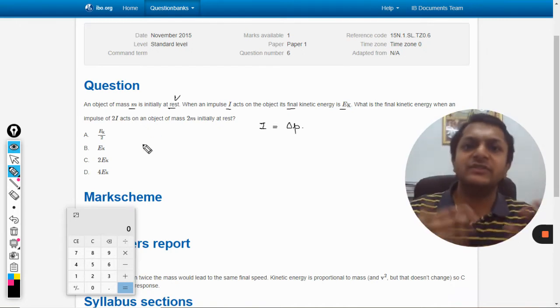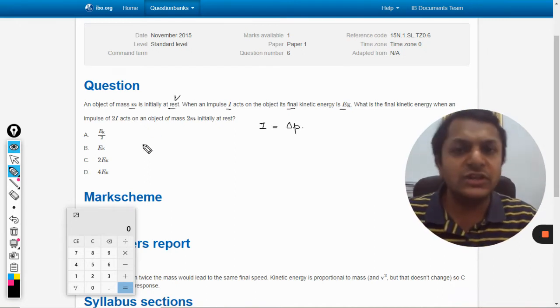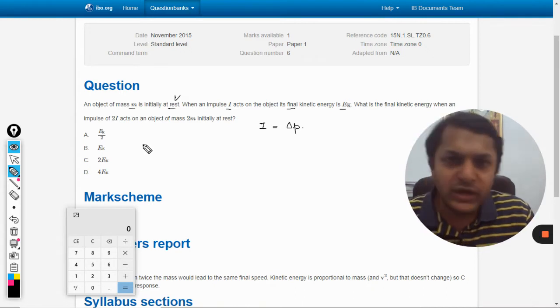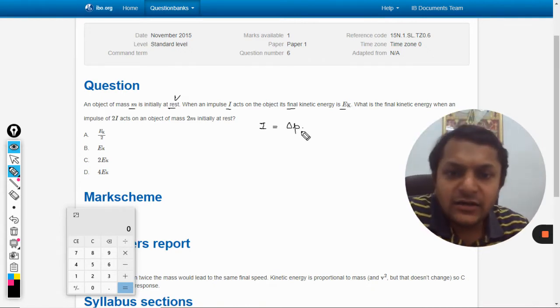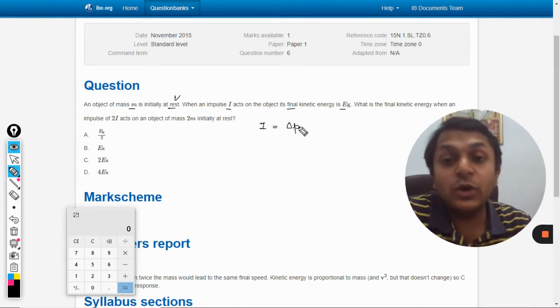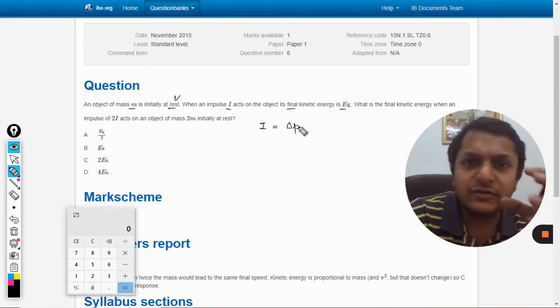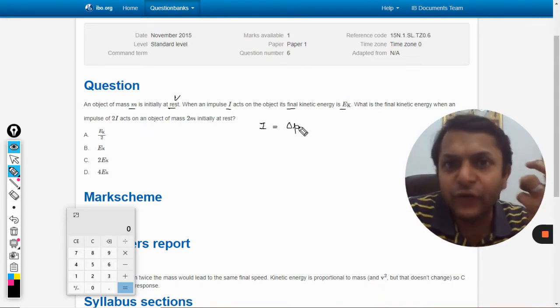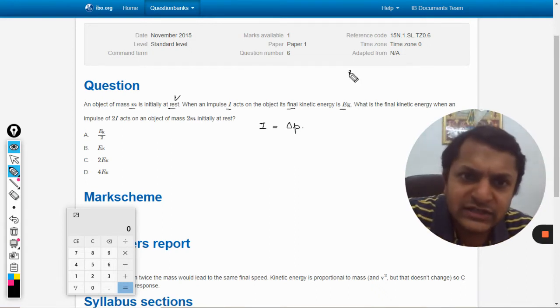Now initially the body is at rest, so initial momentum is zero. We're talking about the total momentum of the body. The question wants you to relate impulse with kinetic energy, so we have to find a formula which relates momentum with kinetic energy.